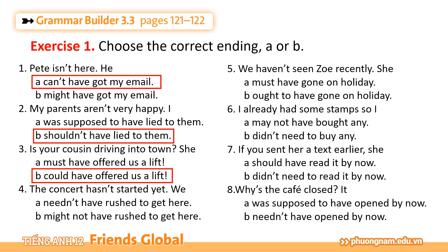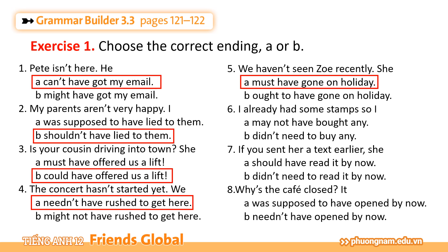Number 4: The concert hasn't started yet. We needn't have rushed to get here — Cái buổi hòa nhạc chưa có bắt đầu. Chúng tôi không cần phải vội vã đi đến đây. Với needn't have thể hiện một hành động chúng ta đã thực hiện rồi nhưng không cần thiết. Number 5: We haven't seen Zoe recently. She must have gone on holiday — với thông tin chúng tôi không có nhìn thấy Zoe dạo gần đây, chúng ta có thể dựa vào thông tin này để suy diễn ra một ý mà chúng ta khá là chắc chắn: cô ấy chắc hẳn đã đi du lịch rồi.